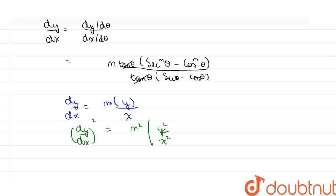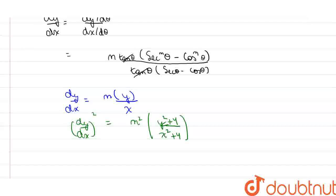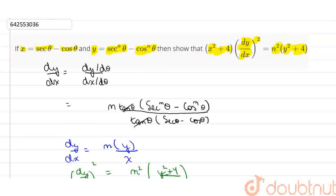Now, using Componendo Dividendo, we get y² plus 4 divided by x² plus 4. Now, taking x² plus 4 on the other side, we get x² plus 4 into dy by dx whole square is equal to n² into y² plus 4, which is the required solution.